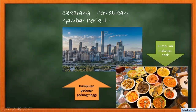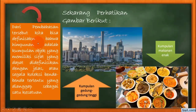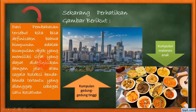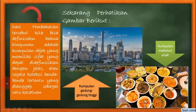Setiap orang berbeda-beda kesukaan dan berbeda-beda rasa, sehingga dapat kita simpulkan bahwa himpunan adalah kumpulan objek yang memiliki sifat yang dapat didefinisikan dengan jelas, atau segala koleksi benda-benda tertentu yang dianggap sebagai satu kesatuan. Jadi, kalau ada pernyataan kumpulan wanita cantik, itu tidak termasuk himpunan. Karena cantik tidaknya itu tidak terukur dengan jelas.